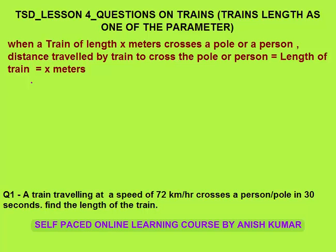Hello, this is Time, Speed and Distance Lesson 4. In this I will discuss questions on trains where train length is one of the parameters — we have to consider the train length. This concept is sometimes very confusing for students whenever a train crosses a person or a pole, or two trains are crossing each other in same or opposite directions.